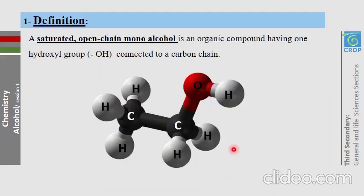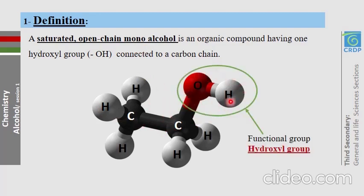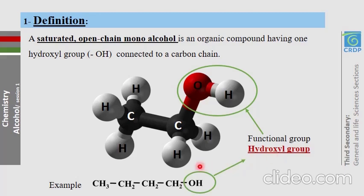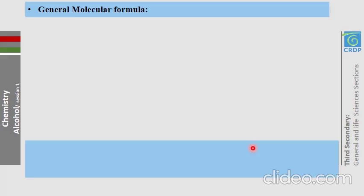We need to know about saturated open-chain mono-alcohols in this chapter. Saturated means the carbon chain contains no double bonds. Open chain means the carbon chain is not cyclic. Mono-alcohols are alcohols whose carbon chain has only one OH group bound to it. This OH group, which is the functional group, is named the hydroxyl group.